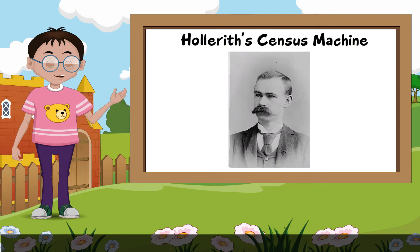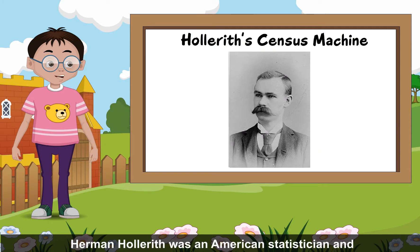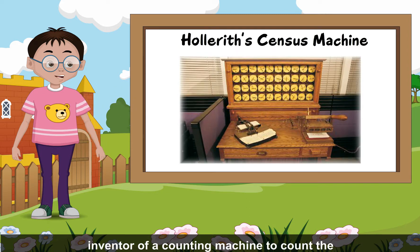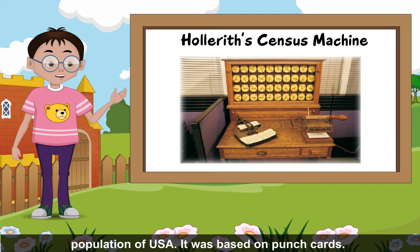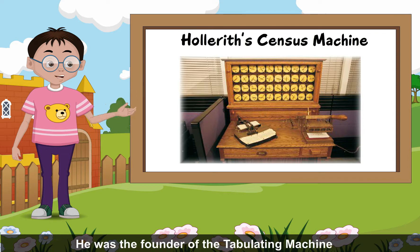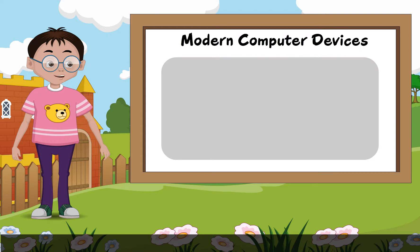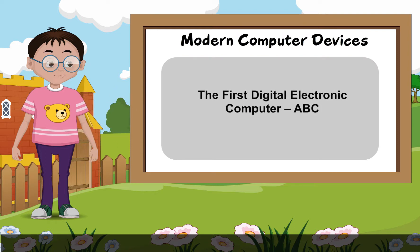Hollerith's Tabulating Machine: Herman Hollerith was an American statistician and inventor of a counting machine to count the population of the USA. It was based on punch cards. He was the founder of the Tabulating Machine Company that later merged to become IBM.